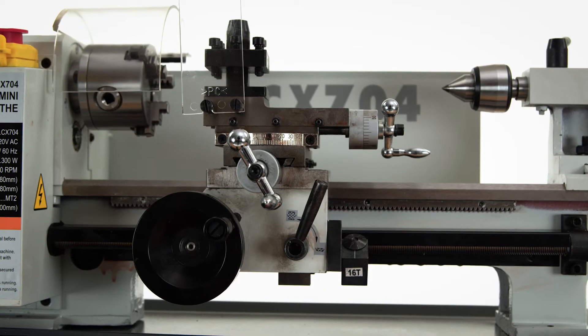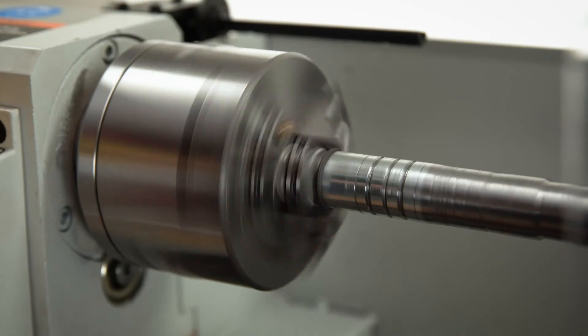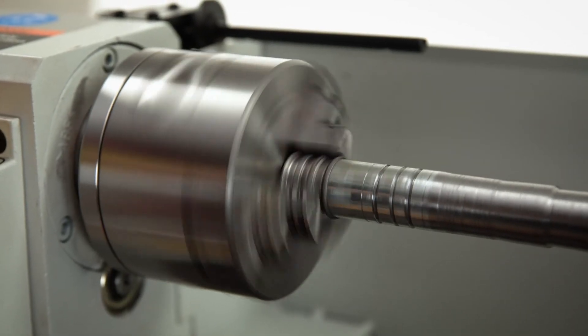A 7-inch swing over bed, forward and reverse spindle direction, and the ability to cut right-hand and left-hand threads.